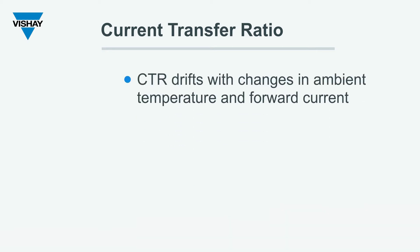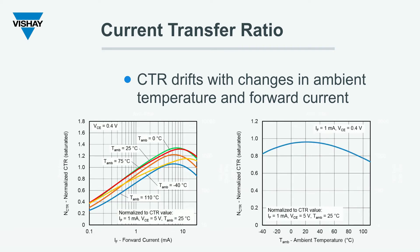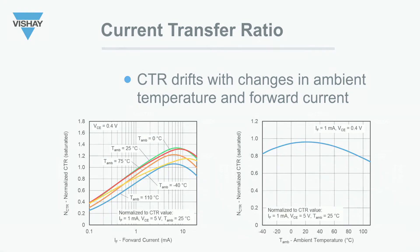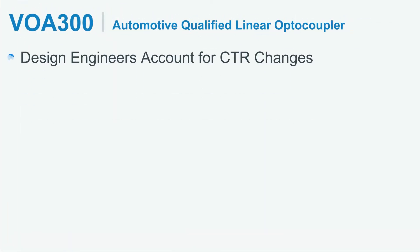Now the CTR can drift with changes in ambient temperature and the forward current, as shown in the images below. Typically, the datasheet covers this kind of curve for the phototransistor. In an application, the design engineers account for these CTR changes.